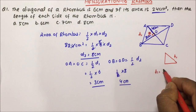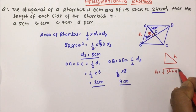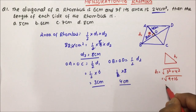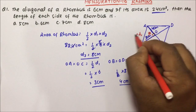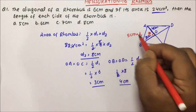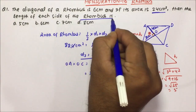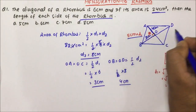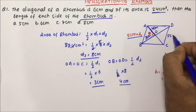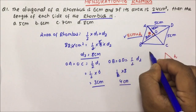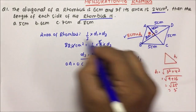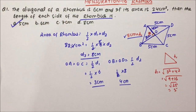The hypotenuse equals √(3² + 4²) = √(9 + 16) = √25 = 5. So this side will become 5 cm. Since a rhombus is a quadrilateral with all four sides equal, the length of each side of the rhombus is 5 cm. So option A will be the correct answer for question number 1.